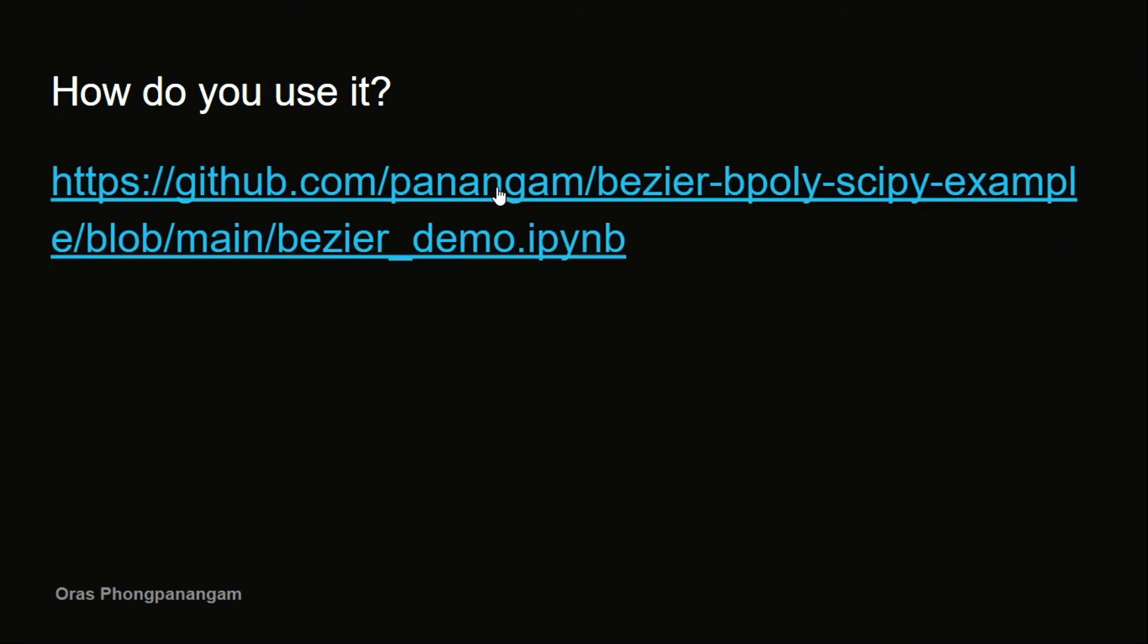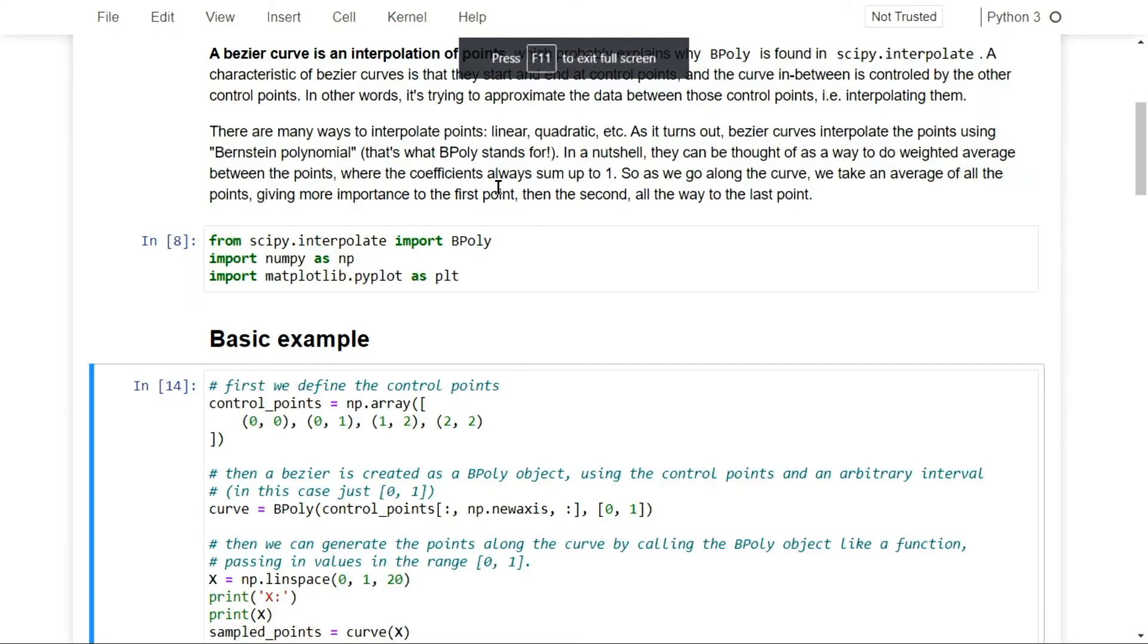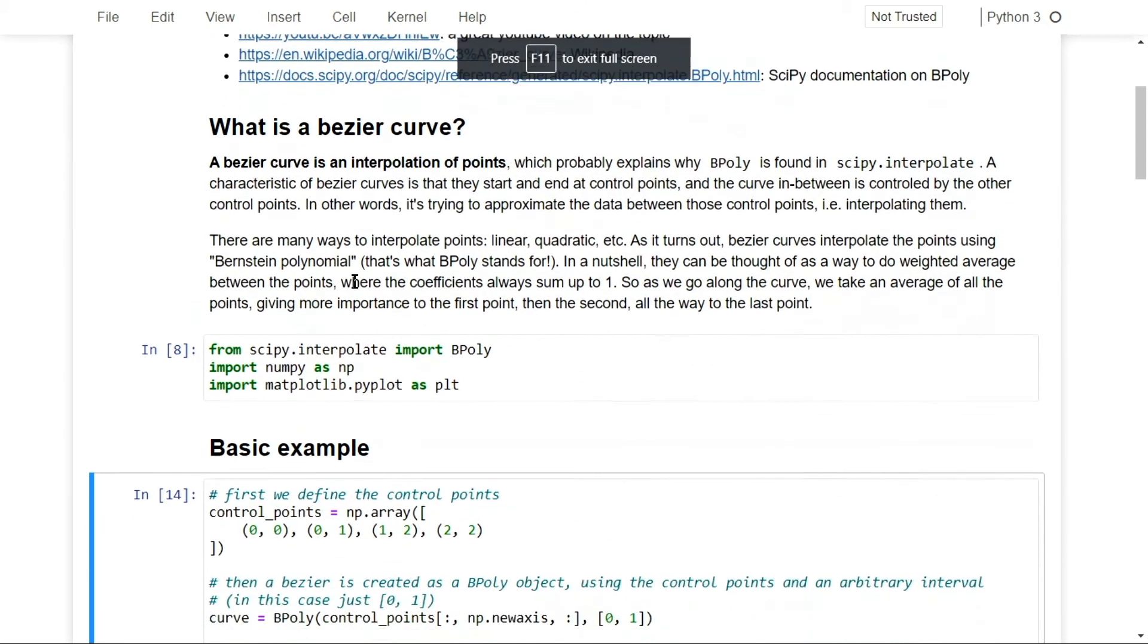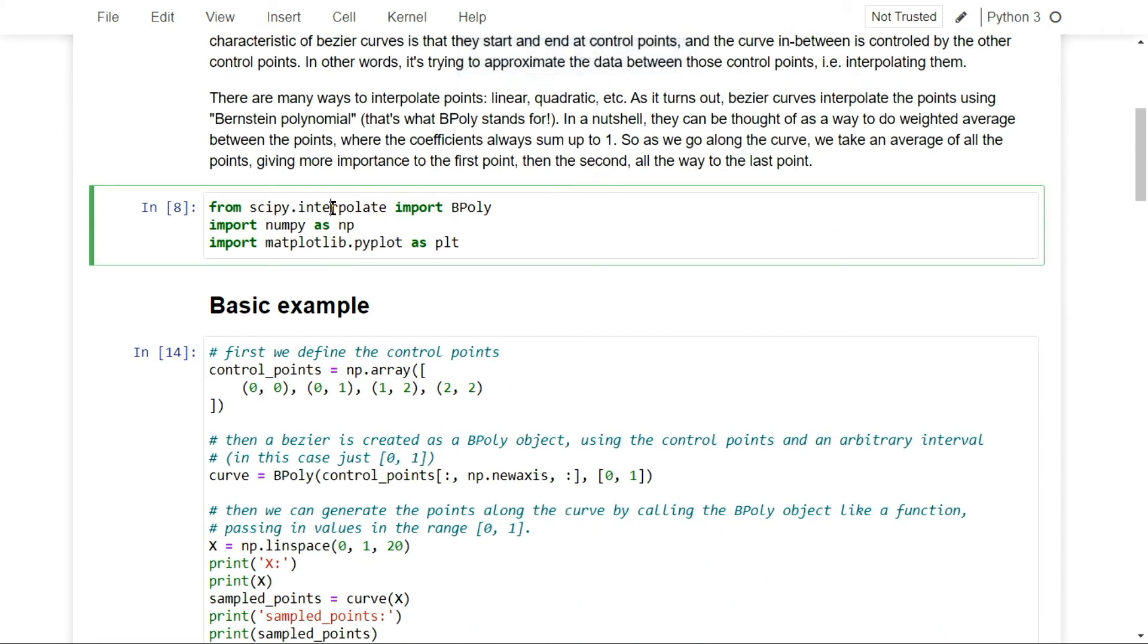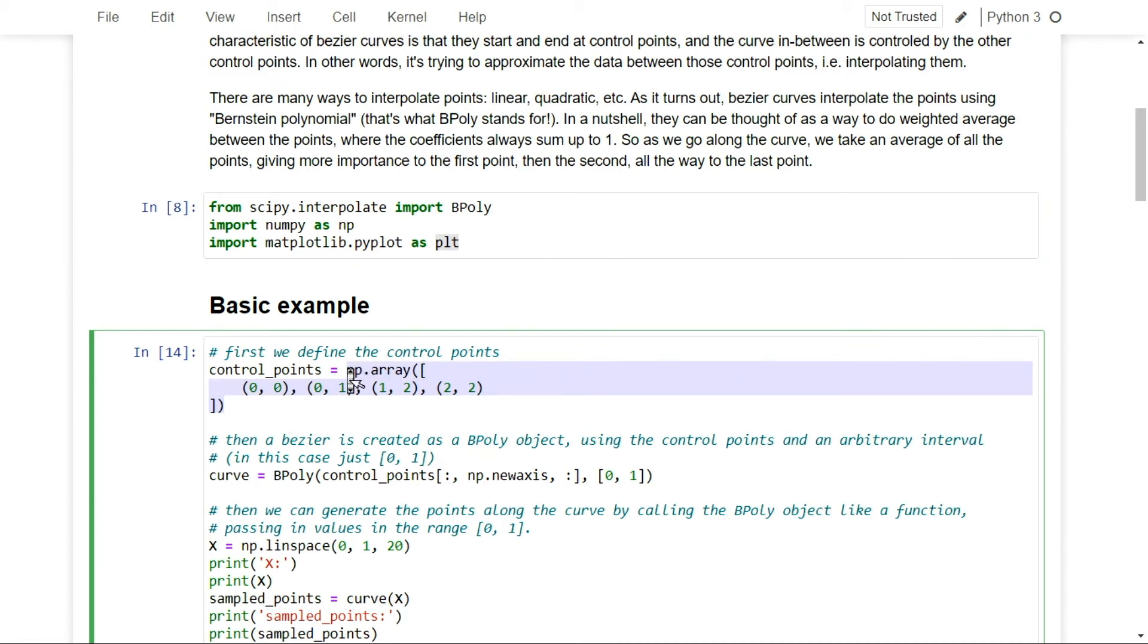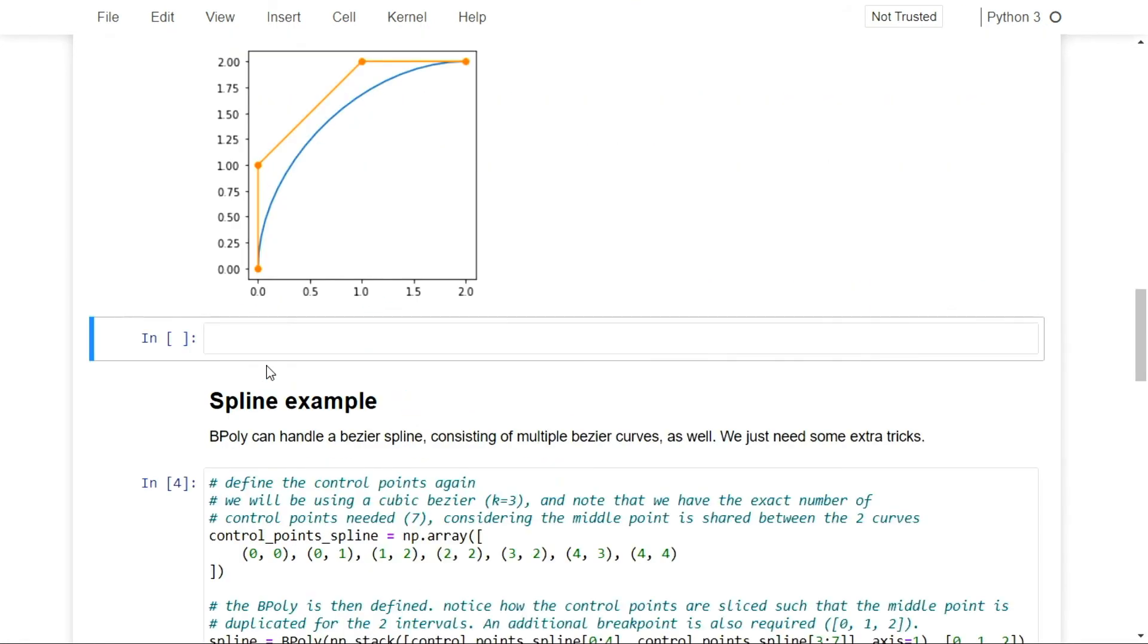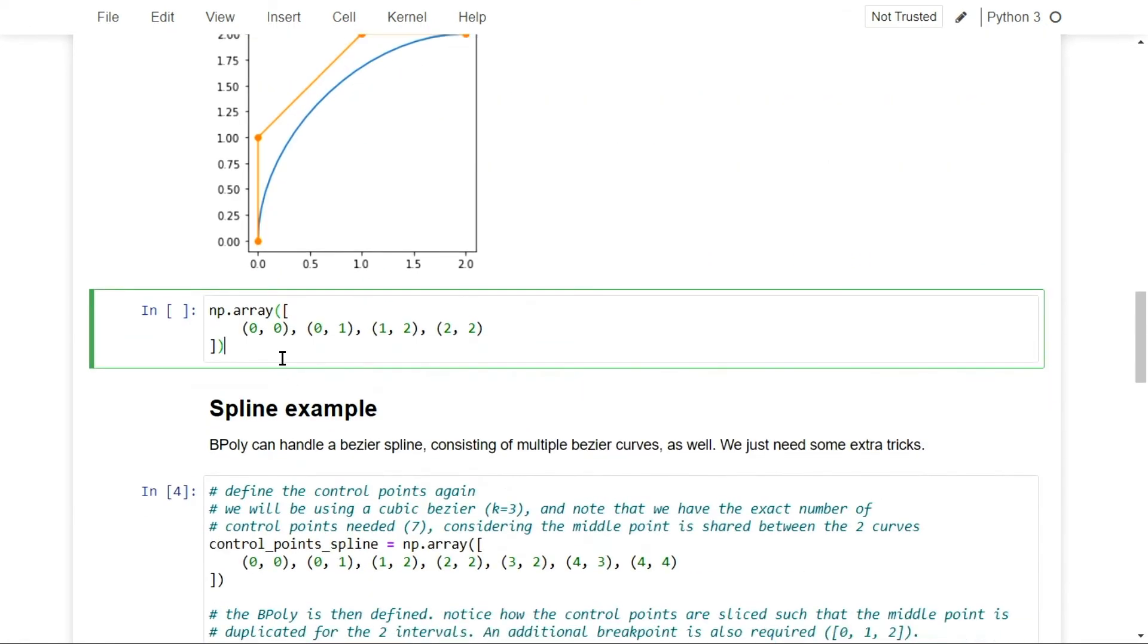And then the usage of it is actually not that complicated. So I have a small demo here. So you would just import Bpoly from interpolate, and numpy and matplotlib are useful in general. So I have my example here. Let's see if I can live code this. So first, you would start by defining your control points.